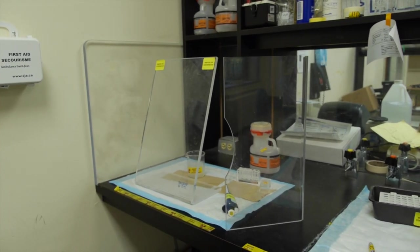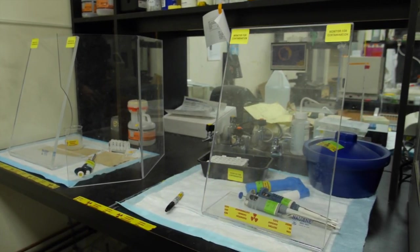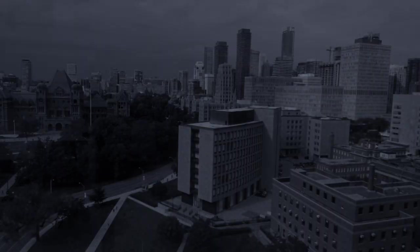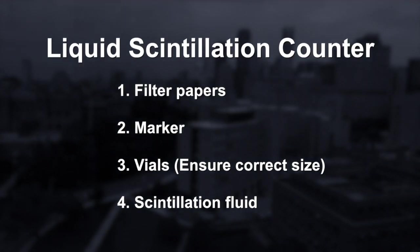Another method in monitoring radioactive contamination is by completing a wipe test and using the liquid scintillation counter. For this you will require filter papers, a marker, vials and scintillation fluid.